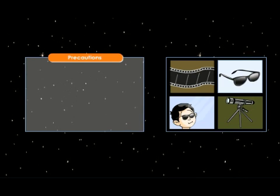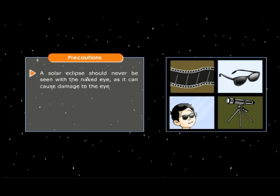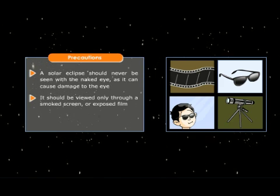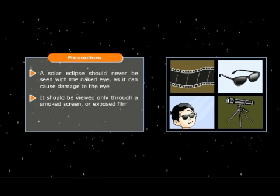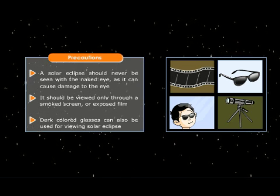Precautions. A solar eclipse should never be seen with the naked eye, as it can cause damage to the eye. It should be viewed only through a smoked screen or exposed film. Dark colored lenses can also be used for viewing a solar eclipse.